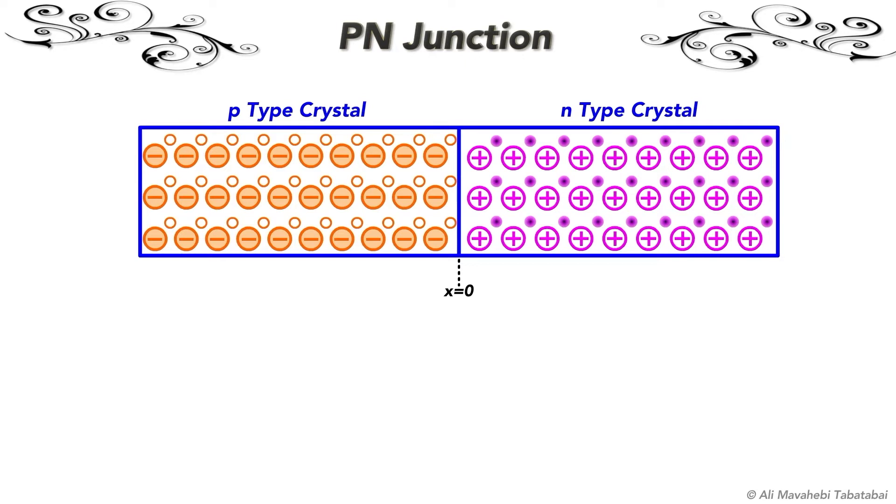As soon as the p-n junction is formed, the holes from the p-side diffuse to the n-region and combine with free electrons. The diffusion takes place because the concentration of holes in the p-side is much higher than the concentration of holes in the n-side.